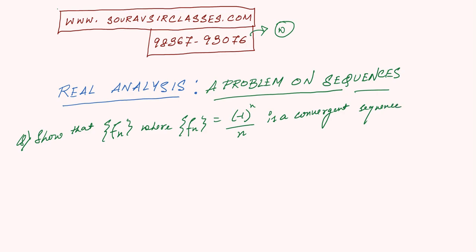We can do this problem in two ways: one is by the definition of limit of a sequence, and the second is by using Cauchy's criteria. We'll do it by Cauchy's criteria since we have done enough problems using the epsilon definition.